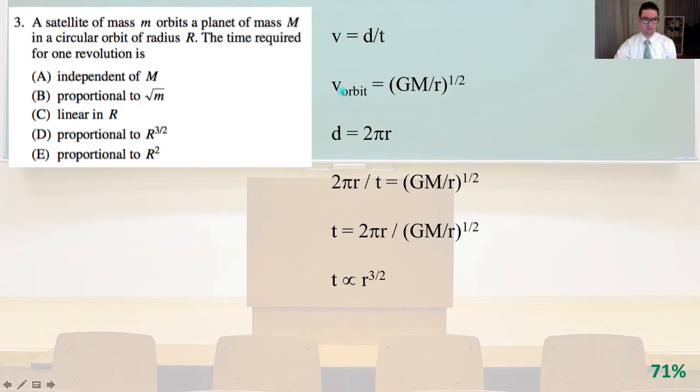Velocity of the orbiting object equals the square root of GM over r, and distance equals 2πr. So 2πr over T equals the square root of GM over r, and then T equals 2πr over the square root of GM divided by r. So T is proportional to r to the three halves, and that is answer D.